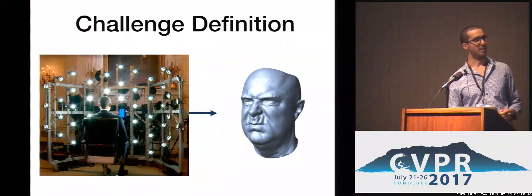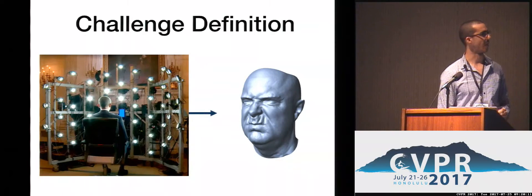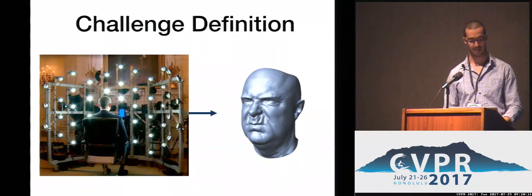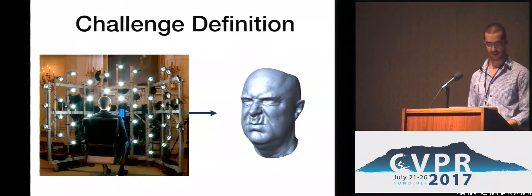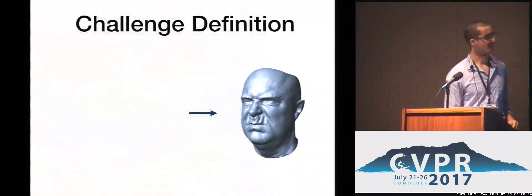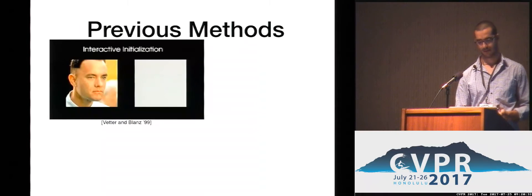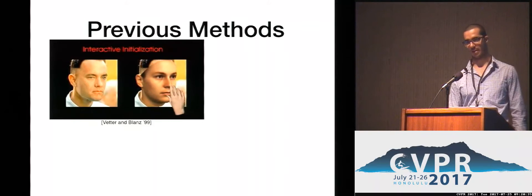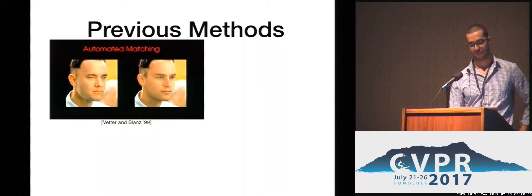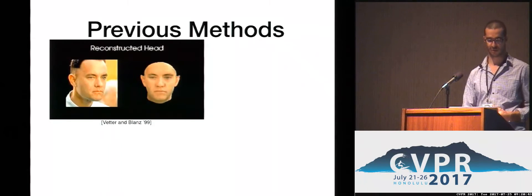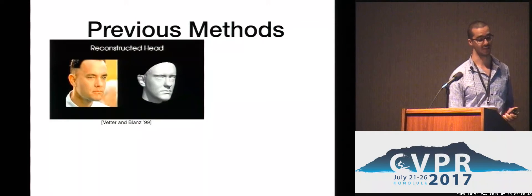Acquiring a high-detail facial structure requires large calibrated camera rigs, and these systems are highly expensive. In this project, the challenge was to replace these systems with a single image that could be a selfie image. This problem has been researched for a while. Bertrand Blunt proposed a three-dimensional morphable model of faces known as 3DMM. However, this model is not robust to expression and does not capture fine facial details.